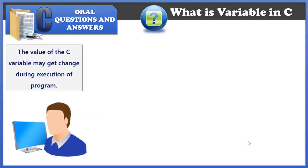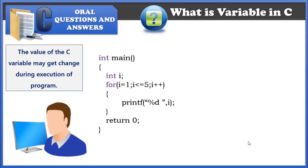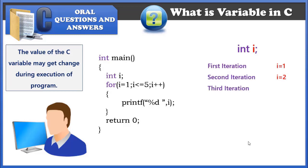The value of a C variable may change during execution of the program. To understand this, let's take a simple for loop which displays the value of i from 1 to 5. In the first iteration i is 1, in the second it's 2, in the third it's 3, in the fourth it's 4, and in the fifth iteration it's 5.